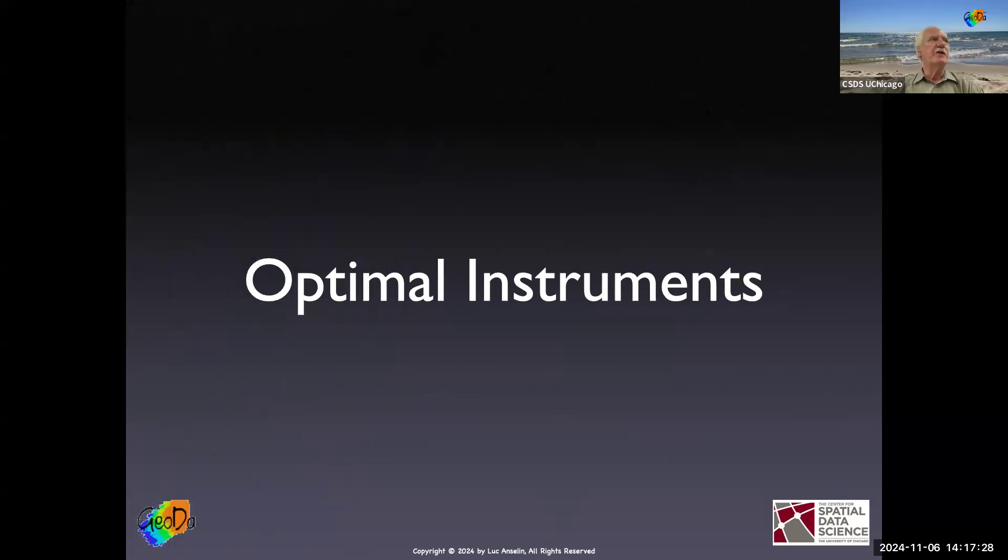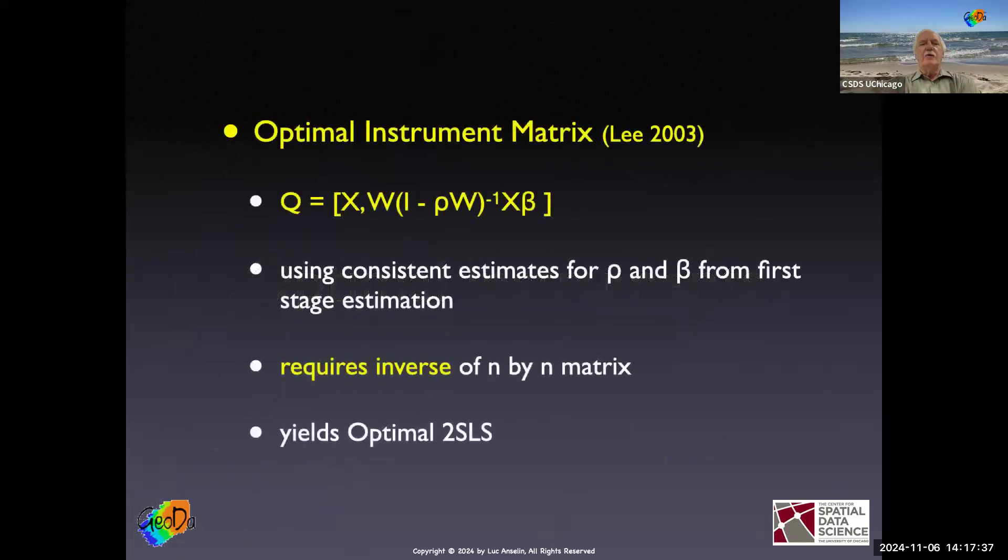As I mentioned, just using the spatially lagged X's is good, but you can do better. And for a while in the literature, there was a big discussion, this is about 20 years ago, about what is the best way to do this. What are the optimal instruments? In practice, it doesn't matter that much, because there's an additional step involved. The optimal instruments, as has been shown formally in this article by Lee, consist of, just as we know, the reduced form, the whole thing. So what we did, or what Kelejian and Prucha did, is they start with the reduced form, they use the power expansion to say, okay, let's just take the spatially lagged X's and we're in business. Now, if you want the whole thing, then this expression is the proper instrument. The problem with that is rho and beta are part of it.